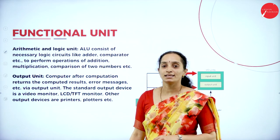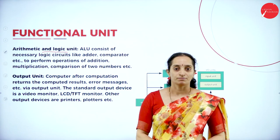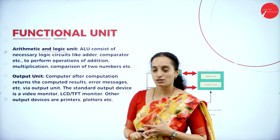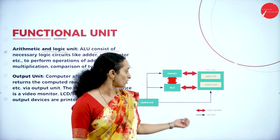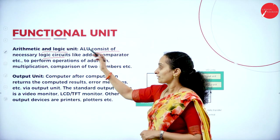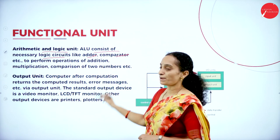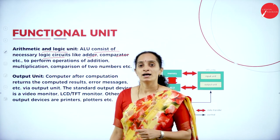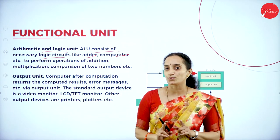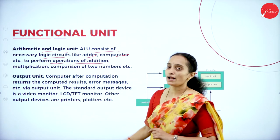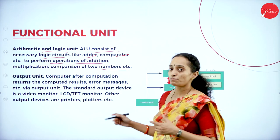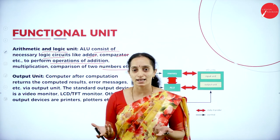The next is the arithmetic and logic unit. The name itself says that it performs arithmetic operations and logic operations. The ALU consists of the necessary logical circuits — which include the adder, comparator, and subtractor. Whatever is needed to perform calculations is included in the arithmetic logic unit. It can perform arithmetic operations of addition, multiplication, division, and subtraction on any size of numbers.